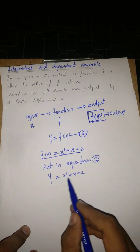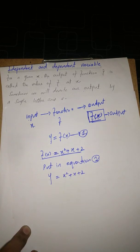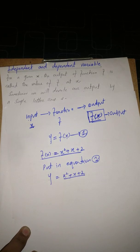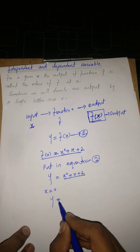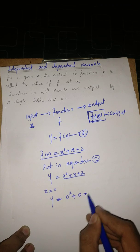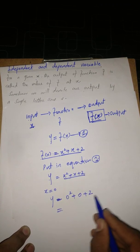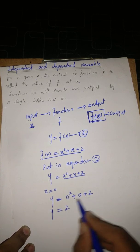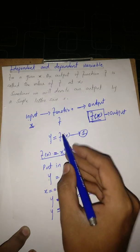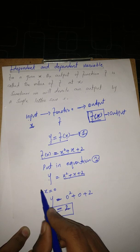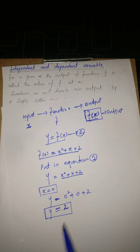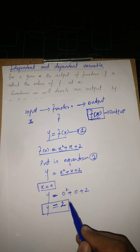Here we see there are two variables, Y and X. X is our input — we can give any value of X. Let's suppose we put X equal to 0. Then we get 0 squared plus 0 plus 2, which after simplification equals 2. So Y, which is our output, equals 2 when input is 0.